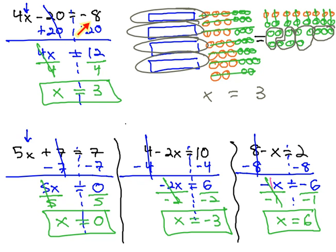These two step equations all solve with the same pattern. Add or subtract the single unit first, and then divide out the coefficient on x.